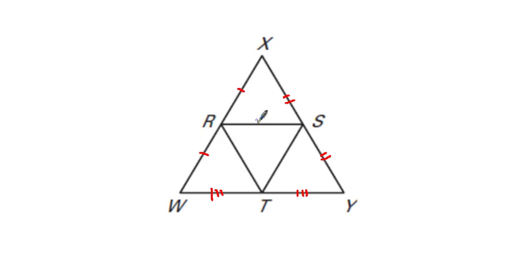We could immediately say that, for example, RS is parallel to the side that it doesn't touch. RS does not touch WY, those sides must be parallel. In this case, RS, just this segment, is a mid-segment. It is made up of two mid-points. That's why we call this right here one of our mid-segments.